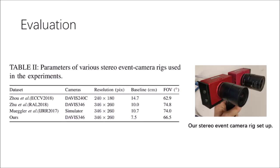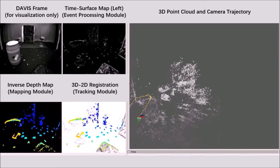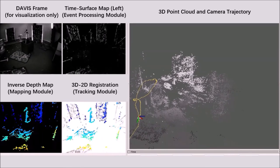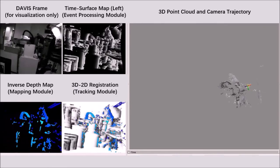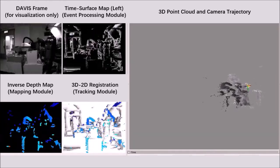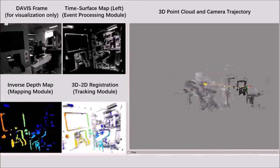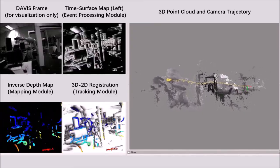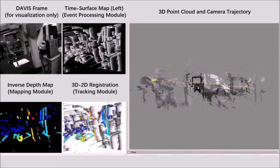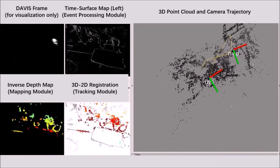We evaluate the proposed system using publicly available datasets. These datasets were collected with different models of DAVIS sensors. The baseline configuration ranges from 7.5 to 15 cm. The cameras were either handheld or mounted on a drone. We also build a stereo rig and collect our own data. The design of the stereo rig has been released together with the software. This demo shows one of our collected sequences at Hong Kong UST.